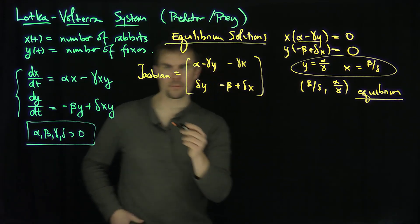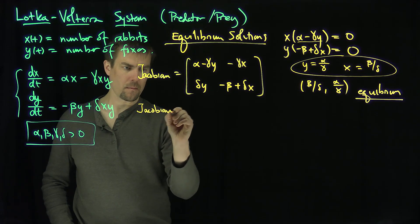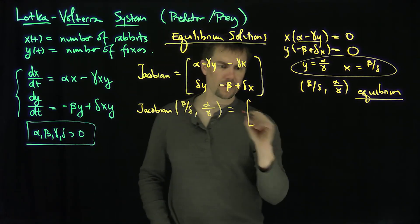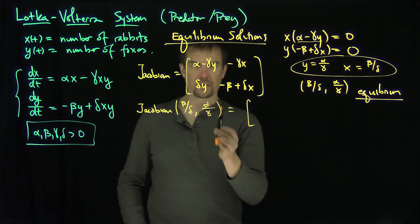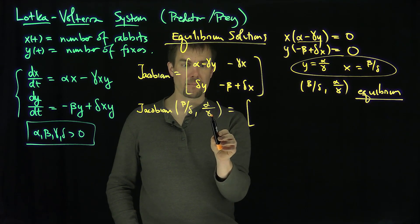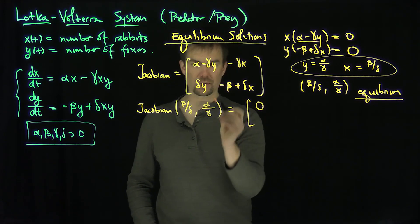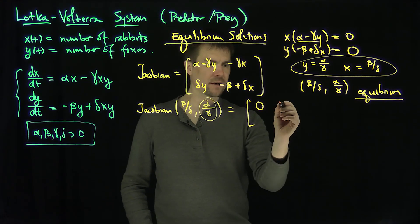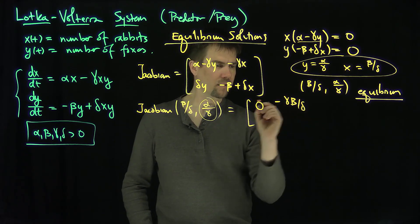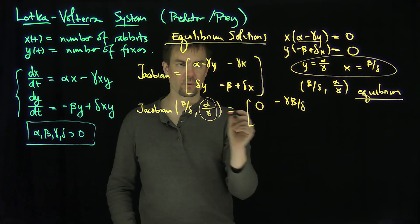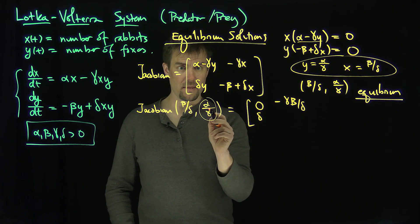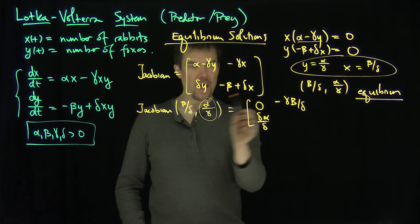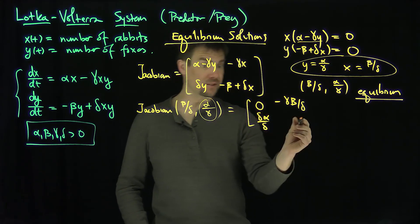Let's evaluate the Jacobian at the equilibrium (beta/delta, alpha/gamma). The top-left entry: alpha minus gamma times (alpha/gamma) = alpha minus alpha = 0. The top-right entry: negative gamma times (beta/delta) = negative gamma beta over delta. The bottom-left entry: delta times (alpha/gamma) = delta alpha over gamma. The bottom-right entry: negative beta plus delta times (beta/delta) = 0.